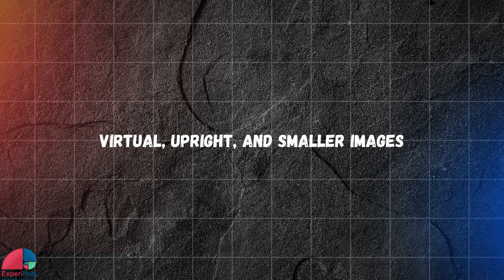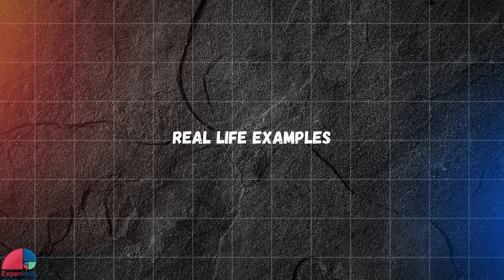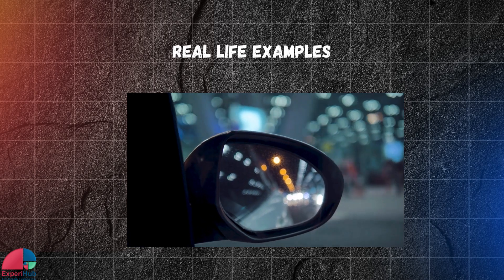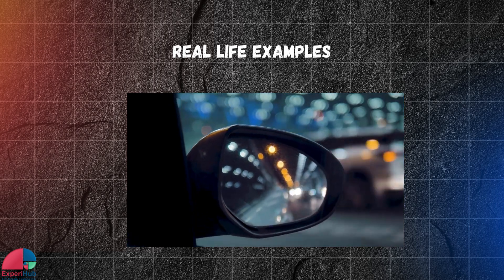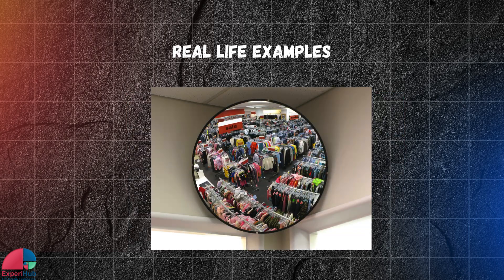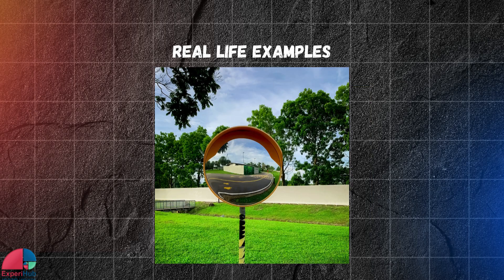Convex mirrors produce virtual, upright, and smaller images, which helps cover a larger field of view. This is why they are used in various places. Car side mirrors help drivers get a wider and diminished view of the road behind them. Store security mirrors are used to monitor large areas and prevent shoplifting. Traffic mirrors are placed at intersections or sharp turns to help drivers see oncoming traffic from blind sides.